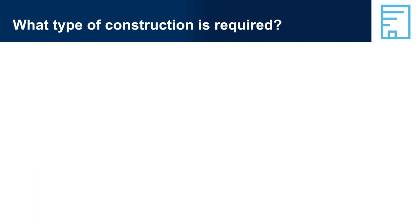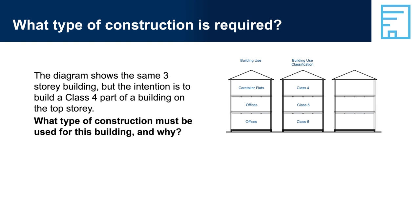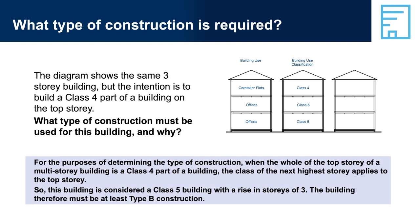What type of construction is required? The diagram shows the same three-storey building, but the intention is to build a Class 4 part of building on the top storey. For the purposes of determining the type of construction, when the whole of the top storey of a multi-storey building is a Class 4 part of a building, the class of the next highest storey applies to the top storey. The building therefore must be at least Type B construction. Refer to Table C2D2. If the Class 4 part of a building was only a portion of the top storey, then the type of construction would be determined by the class of the other part of the top storey.